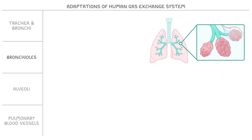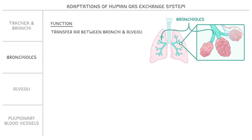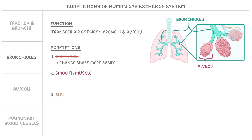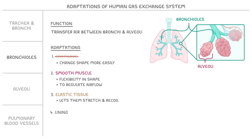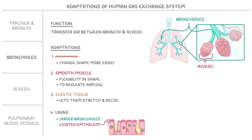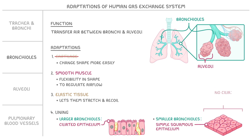Next, let's move on to the bronchioles, which are the smaller airways that function to transfer air between the bronchi and the alveoli. Unlike the trachea and bronchi, bronchioles don't have cartilage, which means they can change shape more easily. They still contain smooth muscle and elastic tissue, giving them flexibility to regulate airflow and lets them stretch and recoil. Larger bronchioles have ciliated epithelium, but smaller bronchioles have simple squamous epithelium — a smoother tissue with no cilia that helps direct air into the alveoli.